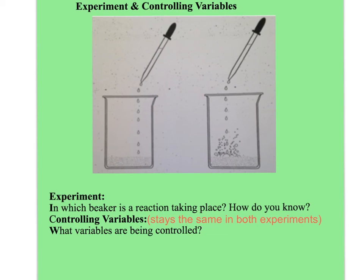Now I want you to open up your workbook — it's going to be a workbook page in the 30s. Find the page that says 'experiment and controlling variables' at the top. We've got two beakers, a beaker on the left and a beaker on the right. For the experiment at the bottom, it says: in which beaker is a reaction taking place — the beaker on the left or the beaker on the right? Tell me how you know a reaction is taking place. Write in complete sentences — this is a two-point question. Hit pause and answer that question.